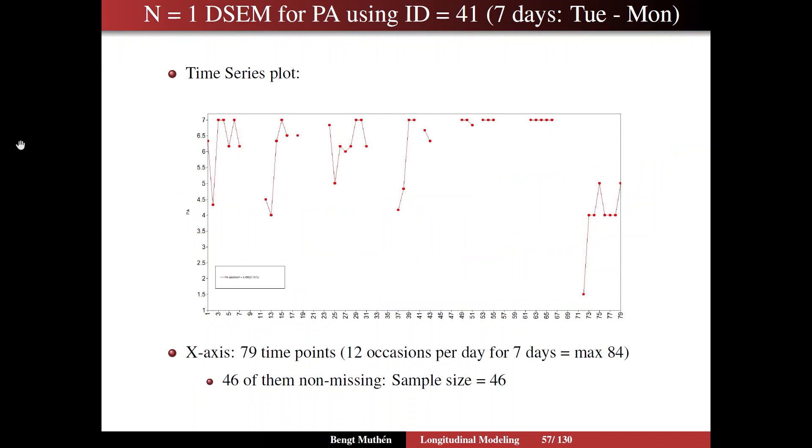On slide 57, we'll take a look at the data for this person 41. Time series plot for seven days, the seven days of Tuesday through Monday. We have the PA score on the y-axis, and we see that the person has pretty level mood, positive affect mood for Tuesday, Wednesday, Thursday, and Friday, but then get very happy on both Saturday and Sunday, and less so on Monday. On the x-axis, this person is observed through 79 time points, and there are 12 locations per day with t-interval two. So 12 per day for seven days, max 84.